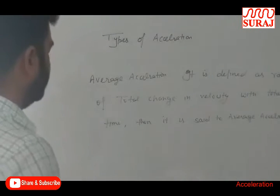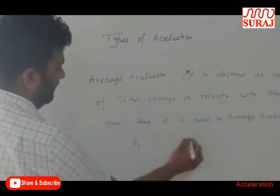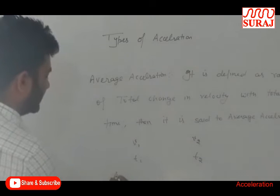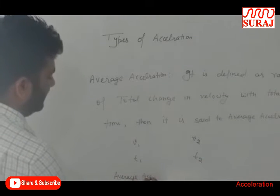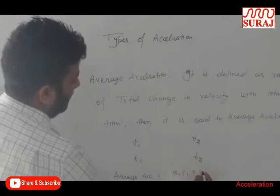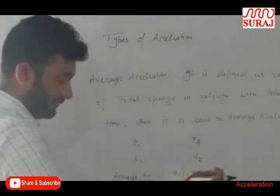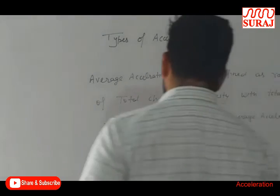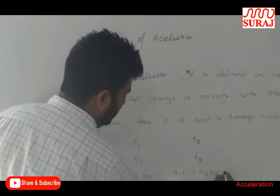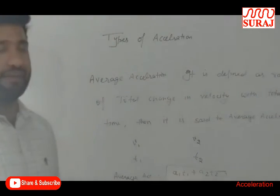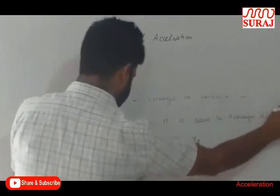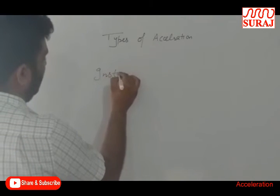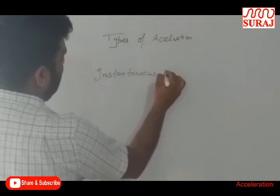If there are two bodies moving with velocities v1 and v2 taking times t1 and t2, then average acceleration is equal to (a1·t1 + a2·t2) / (t1 + t2), where a1·t1 is the velocity change of the first body and a2·t2 is the velocity change of the second. This is the formula for average acceleration.